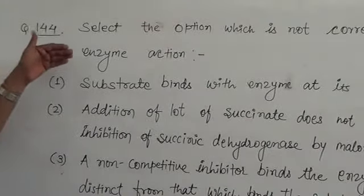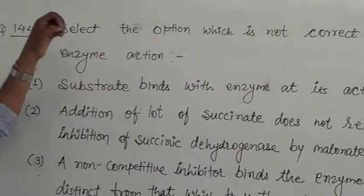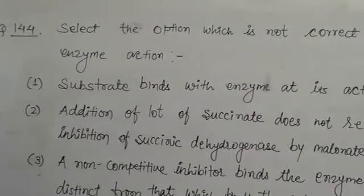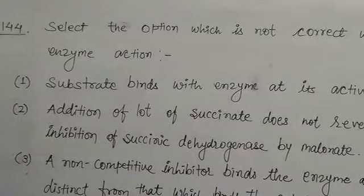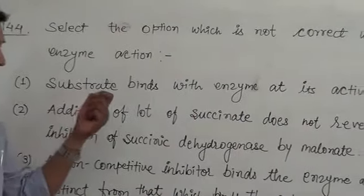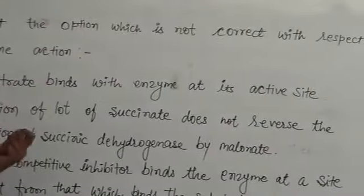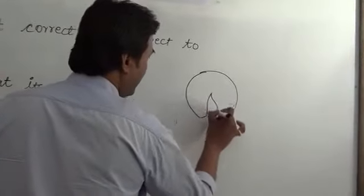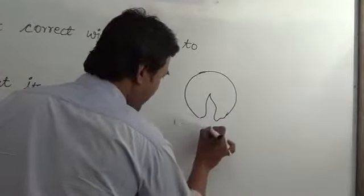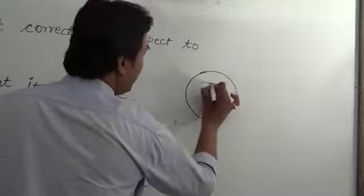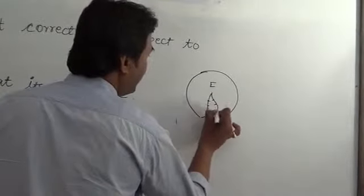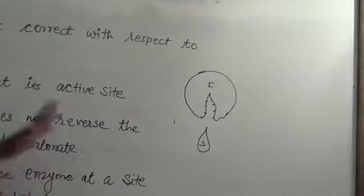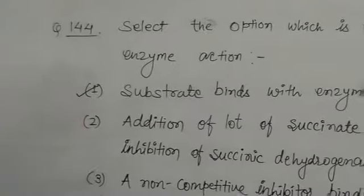In other words, we need to identify which statement is incorrect. Number 1: Substrate binds with enzyme at its active site. Generally, enzymes have active sites and substrate binds to the active site of the enzyme. According to this theory, the first option is correct.